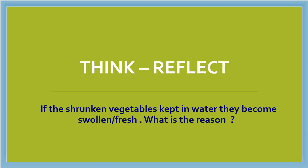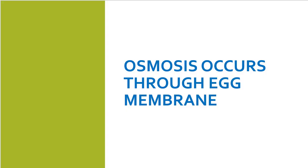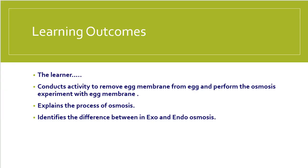You will get the answer to that question through this lesson. Osmosis occurs through egg membrane. In this lesson, the learner will conduct an activity to remove the egg membrane from an egg and perform the osmosis experiment with it. We will also explain the process of osmosis and identify the difference between exosmosis and endosmosis.